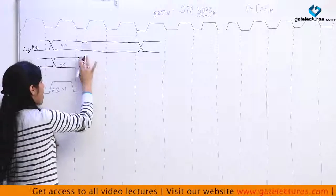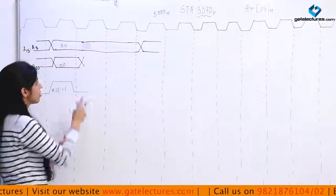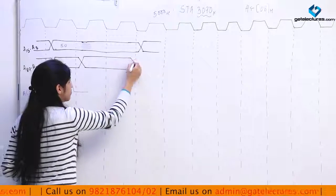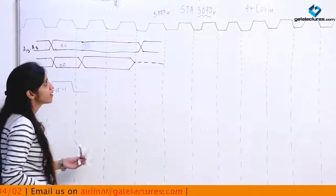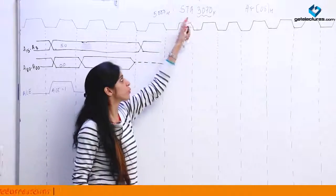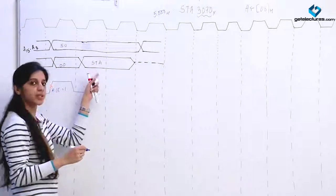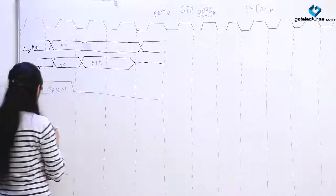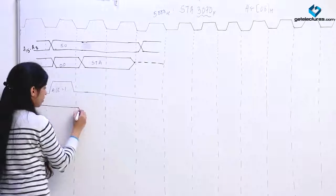As soon as you make ALE low (ALE = 0), this is going to act as data bus. Now what data is it going to get? At 5000 we have this instruction — we have this opcode STA. So STA is going to come on the data bus when ALE is low. Also, to read this instruction from memory we are going to give a read signal.